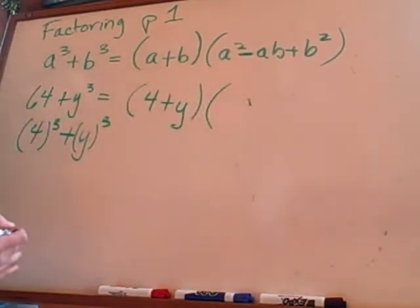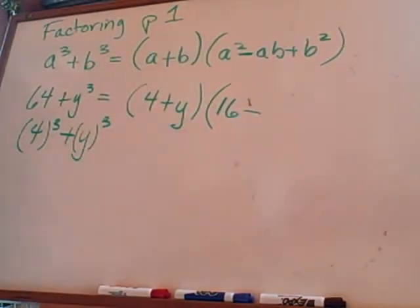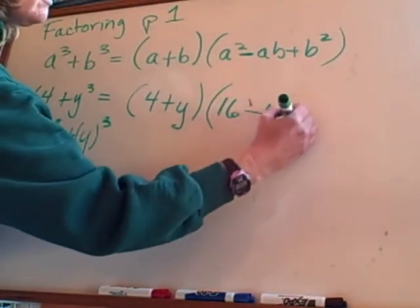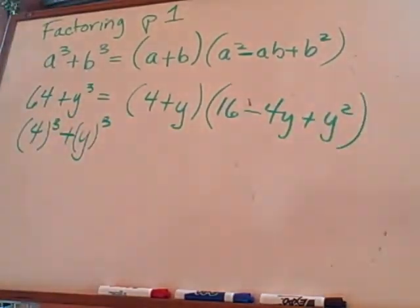What is a squared? 16. What's a times b? Minus 4y. 4y here. And then b squared is y squared. All right. So that's how you factor the sum or difference of perfect cubes.